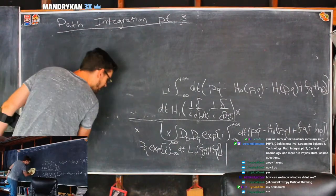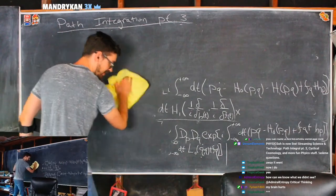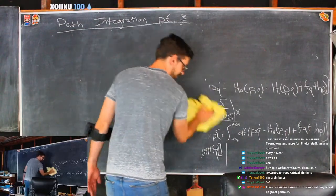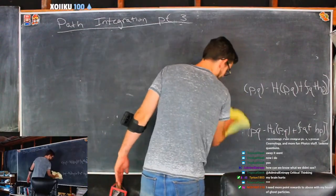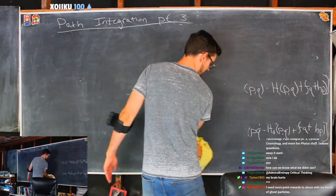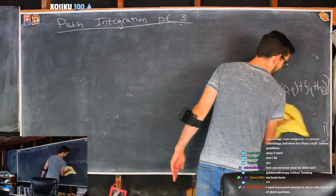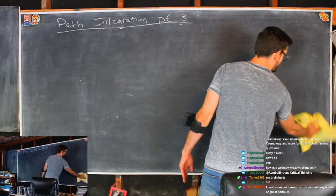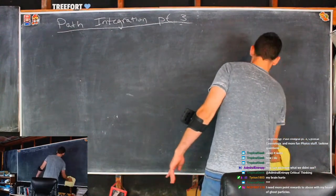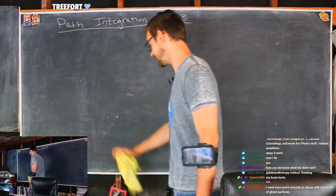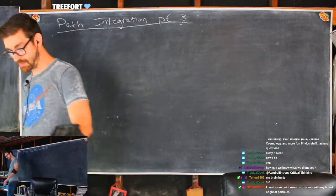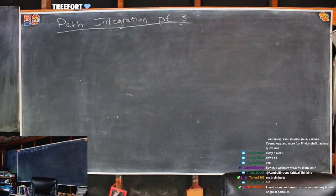We're going to do all of chapter seven today. Chapter seven in Srednicki is two to three pages — very short. It's your friend and mine: the harmonic oscillator.